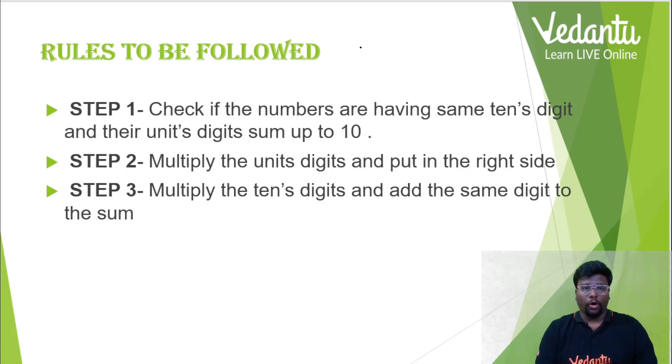Let's get to the thing. Now, rules to be followed. Step one, check if the numbers are having same tens digit and their unit digit sums up to 10. Right? Which we just checked. 46, 44, 4 and 4, same tens digit. 6 and 4 will add up to 10.